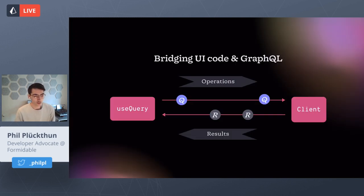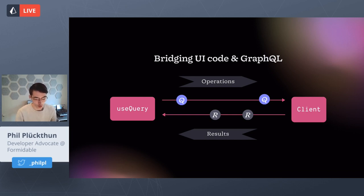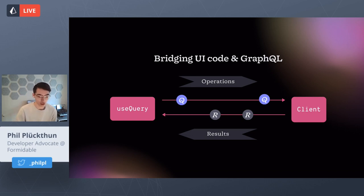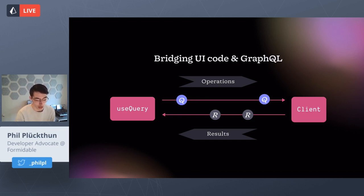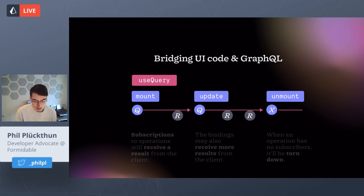In Urkel, we have a UI part and a client part. In React bindings, you use 'useQuery,' pass in a query, and it sends it to the client — we call that the operations flow. As components change, they may generate new queries. The client receives these and eventually delivers results back. As the UI subscribes to a certain operation, it will eventually get GraphQL results.